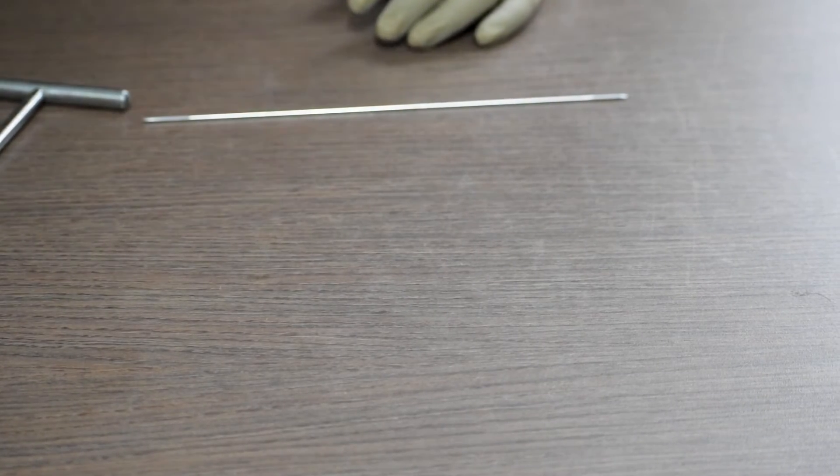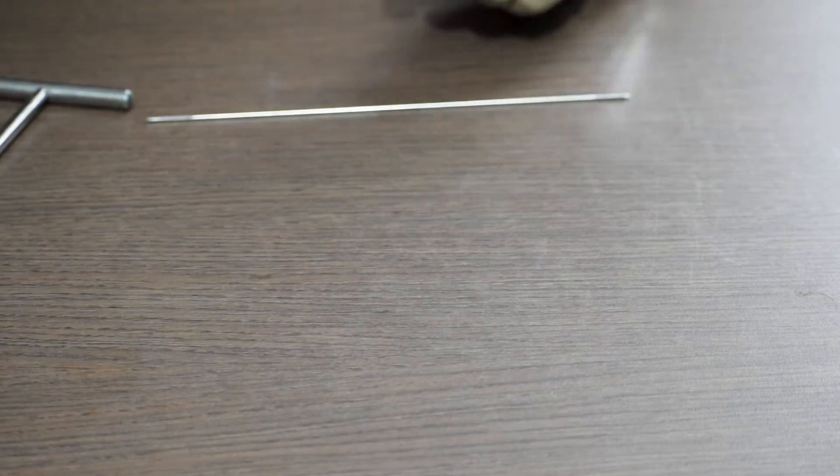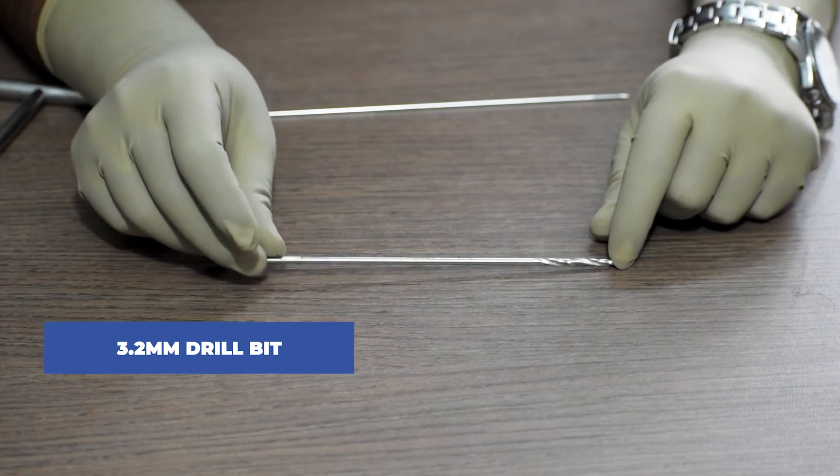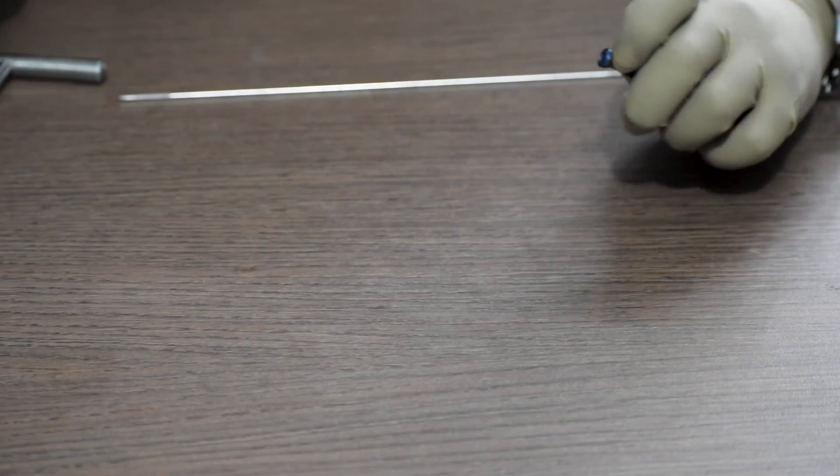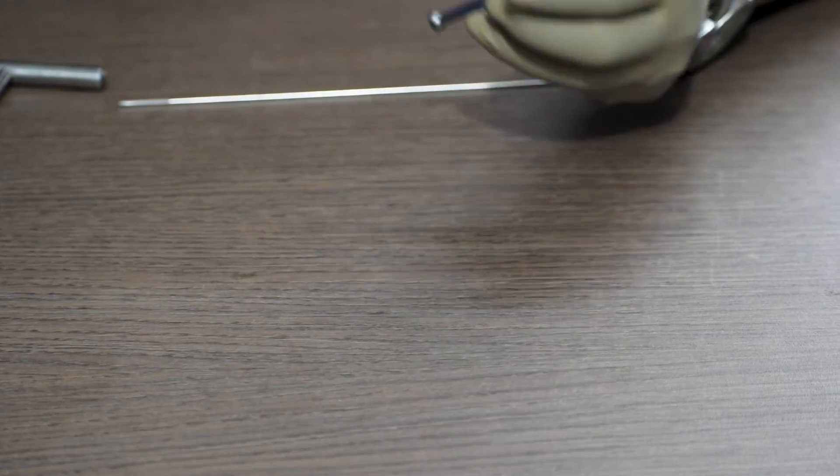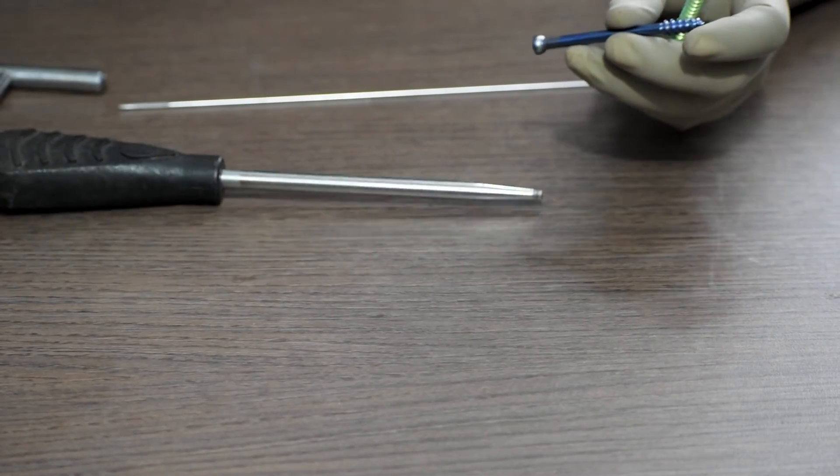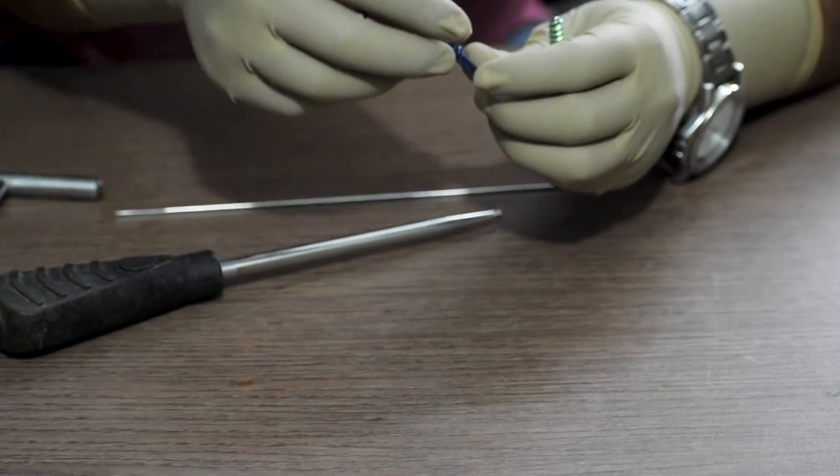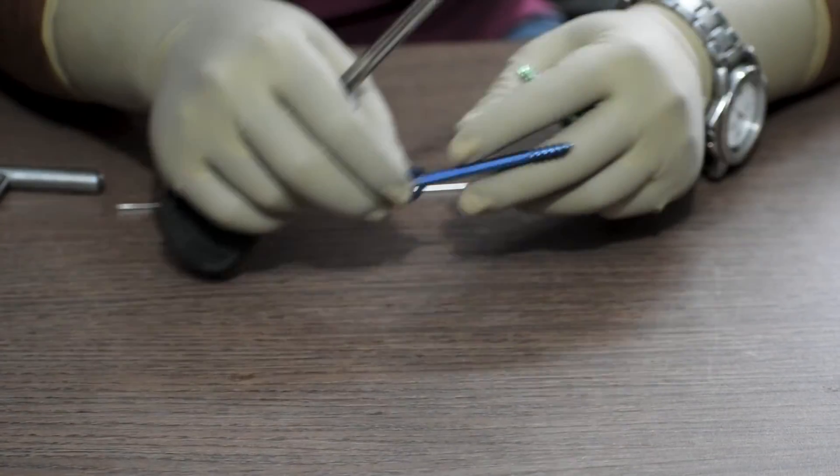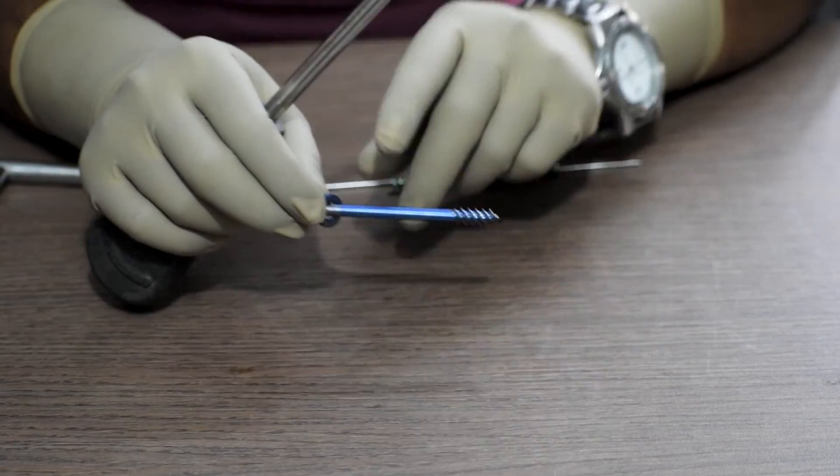Now, if we require to fix the solid screws as well, we will use the 3.2mm solid drill bit. Once the drilling is done, we will take the 6.5mm short thread or full thread cancellous screw, whichever is required to be fixed, of measured length. And we will also use a washer.